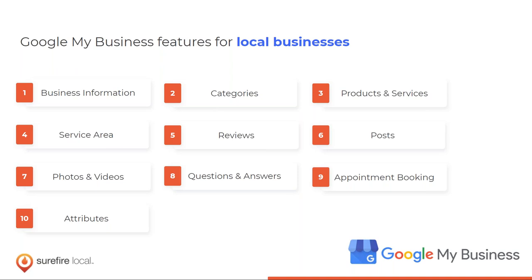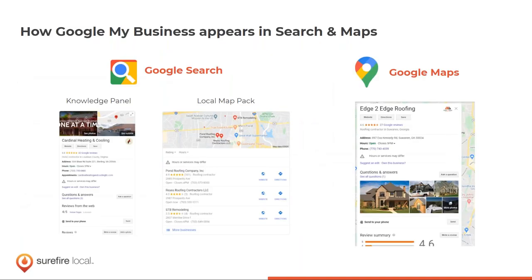Your Google My Business page covers basic company information, reviews, products and services, and people can even book appointments through it. You've likely encountered it in three capacities: the Knowledge Panel — which appears on the right side when you search a specific business name; the Map Pack — served up with generic searches like 'roofer near me'; and Google Maps — where you can click individual listings. All three pull from the same data source, just different user interfaces.